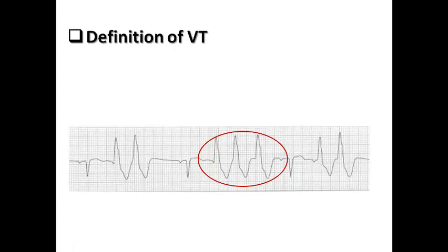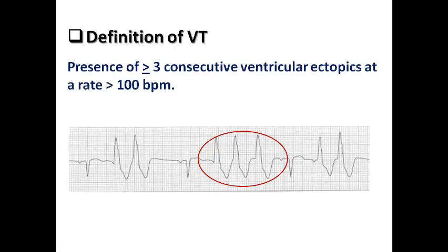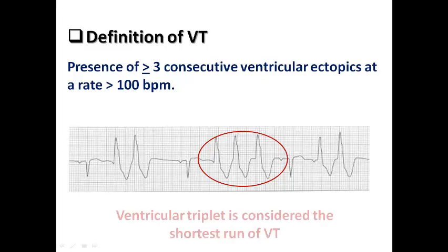What is the definition of ventricular tachycardia? VT is defined as the presence of three or more consecutive ventricular ectopics at a rate of more than 100 bpm. A ventricular triplet — three consecutive ventricular ectopics — is the shortest run of VT and is considered non-sustained ventricular tachycardia.